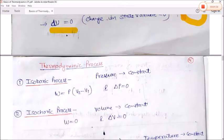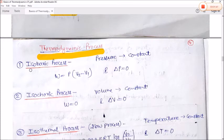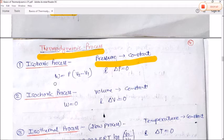Now we briefly look at the types of thermodynamic processes. First is the isobaric process — a process in which pressure is constant. In this case, work done W = P(V2 − V1), and since pressure is constant, ΔP = 0.